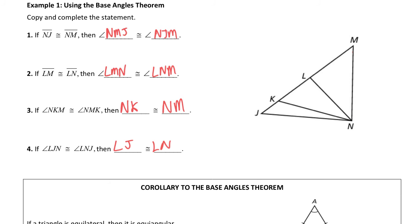Angle LJN, angle LNJ. LJN would be this angle. LNJ would be this angle. So if I'm thinking opposite, it would be LN opposite LJ.